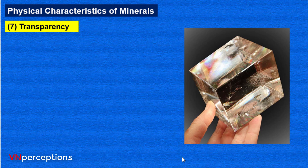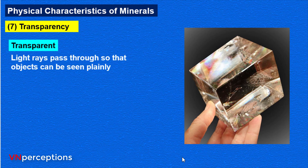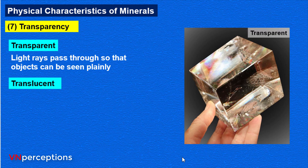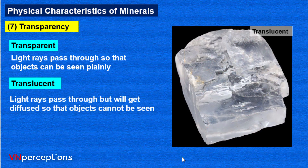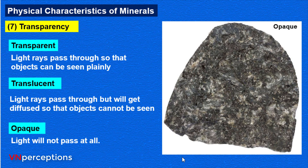Next is transparency. A particular mineral is transparent when light rays pass through it so that objects can be seen plainly. It is translucent when light rays pass through but get diffused so that objects cannot be seen clearly. It is opaque when light will not pass through at all. So any mineral can be transparent, translucent, or opaque.